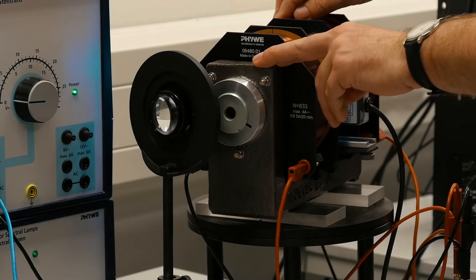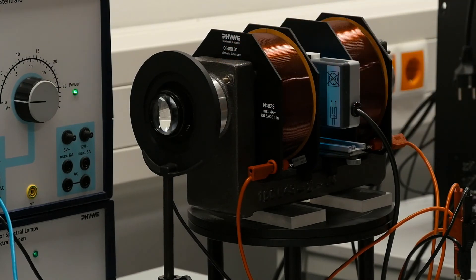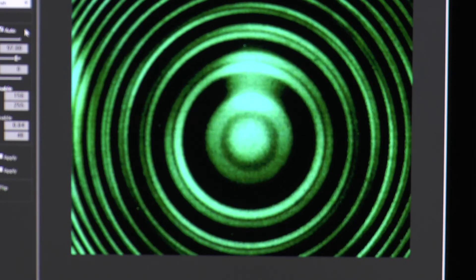Observe the rings again with the interference filter for a current of 5 amperes when the polarization filter is rotated by plus or minus 45 degrees.